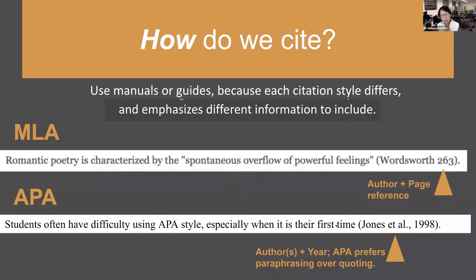In APA, they're more concerned about the year in which it was published. For example: 'Students often have difficulty using APA style, especially when it is their first time' (Jones et al., 1998). Notice it's the author — and in APA it's often multiple authors, so 'et al.' means 'and others' — then the year published. Also important: APA prefers paraphrasing over quoting. Psychology and sociology are fields where they prefer you to paraphrase rather than quote, so most of the time you will not see page references in APA.